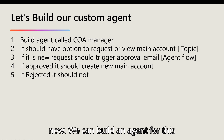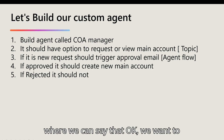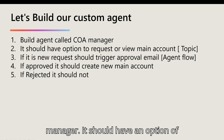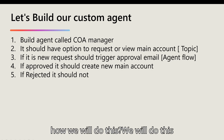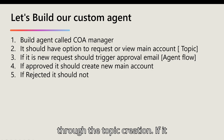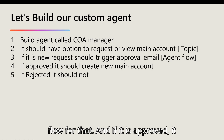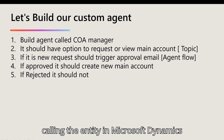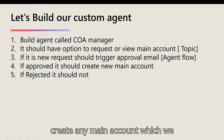We can build an agent for this specific requirement — a Chart of Account Manager agent — with an option of requesting or viewing the main account. We'll do this through topic creation. If it is a new main account request, it should trigger an email; we can use an agent flow for that. If it is approved, it should create a new main account by calling the entity in Microsoft Dynamics 365. If it is rejected, it should not create the main account.